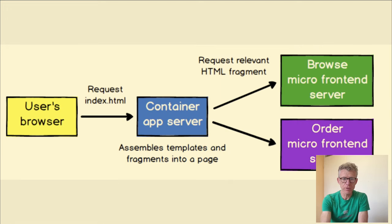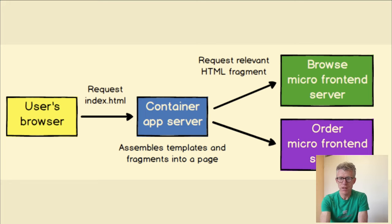Here's another example, a little more complex. A user does a request. We have a container app server which assembles templates that come from the micro frontends. Each micro frontend has its own server — the green browse micro frontend has its own server, the other micro frontend is running on its own server. The blue box in the middle assembles the templates and fragments into the page.